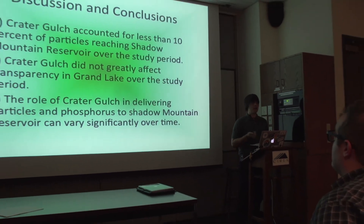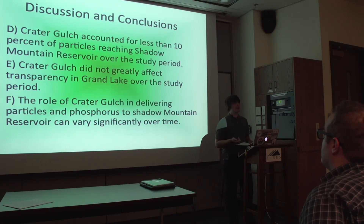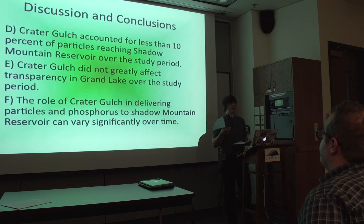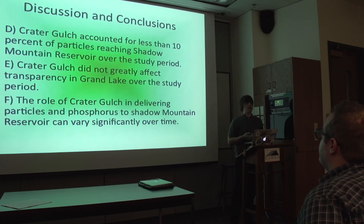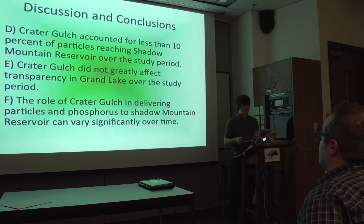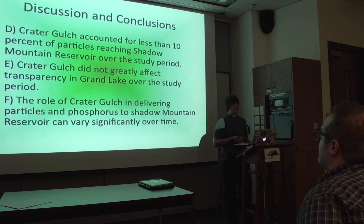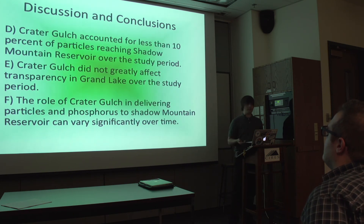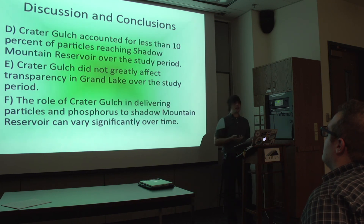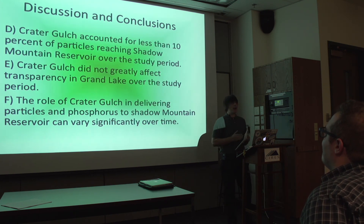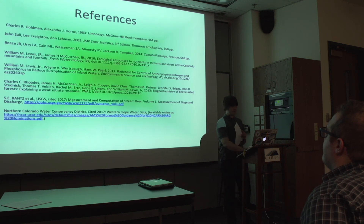Crater Gulch did not greatly affect transparency in Grand Lake over the study period. However, based on historical data, particle concentrations from Crater Gulch watershed have typically been 100 to 1,000 times higher than the 20 microgram per liter range measured during this study. The effect would probably be greater during summer with stronger thunderstorms and higher precipitation. The role of Crater Gulch in delivering particles and phosphorus to Shadow Mountain Reservoir can vary significantly depending on thunderstorm frequency and precipitation events. To get an accurate estimation of total mass transport contribution, this study would need to be scaled over a number of years. Thank you.